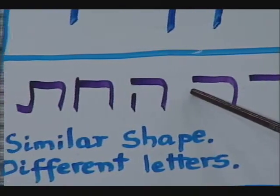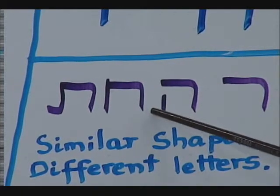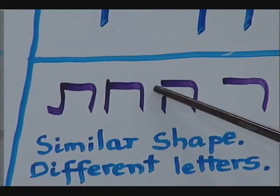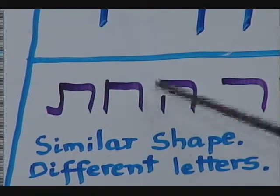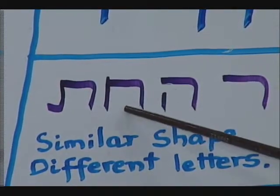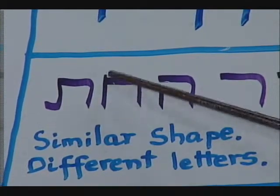Then we have over here the he, and that is, of course, similar to the het. The difference is the opening. It allows for some air to pass through. And the het, which has no opening, causes this CH sound when pronounced because the air is closed off.